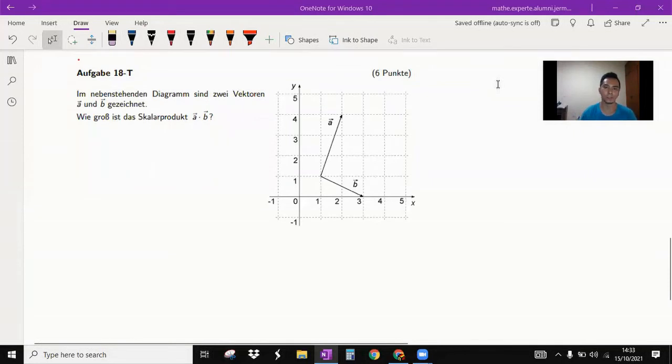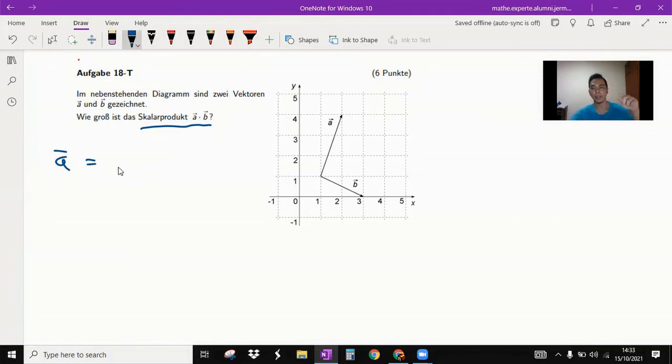The next one is vector, so we have to calculate the scalar product a times b. Let's look first at vector a. Here we have two dimensional vector in x and y axis. So you have to define your a - look from here, it goes to the right one step, and you go up there three steps. So it means it's one, three.